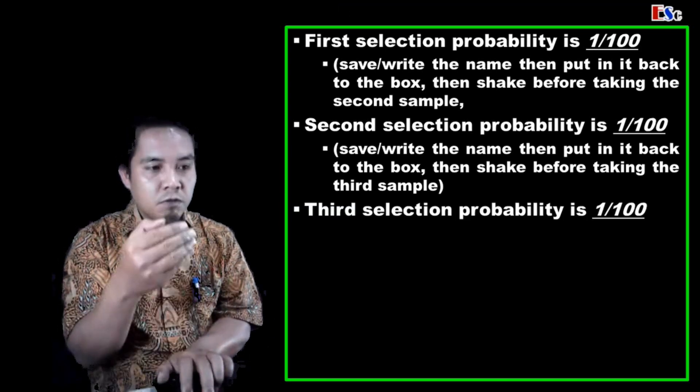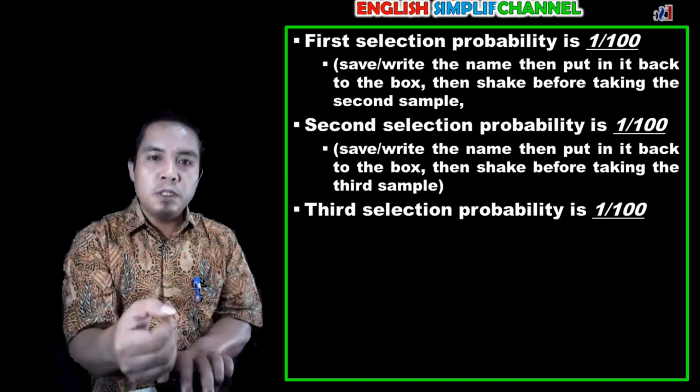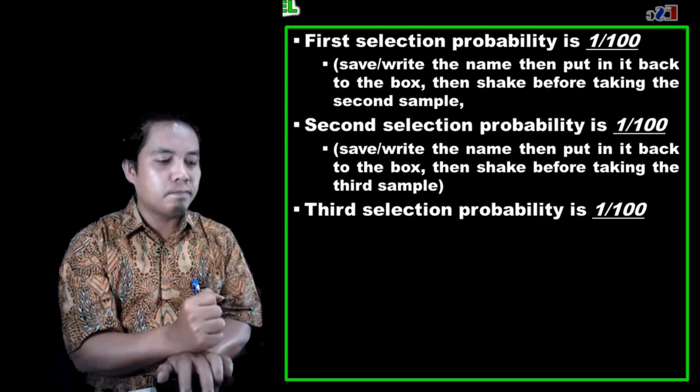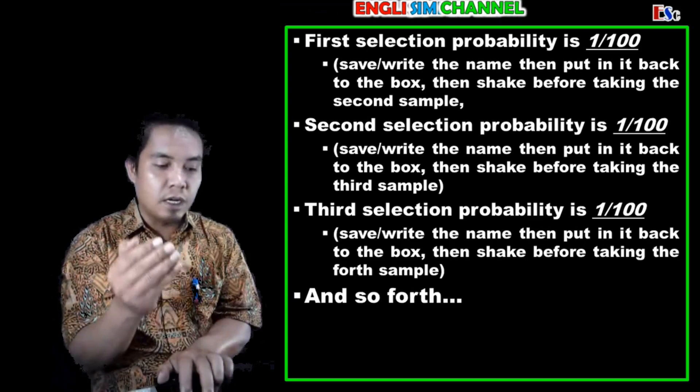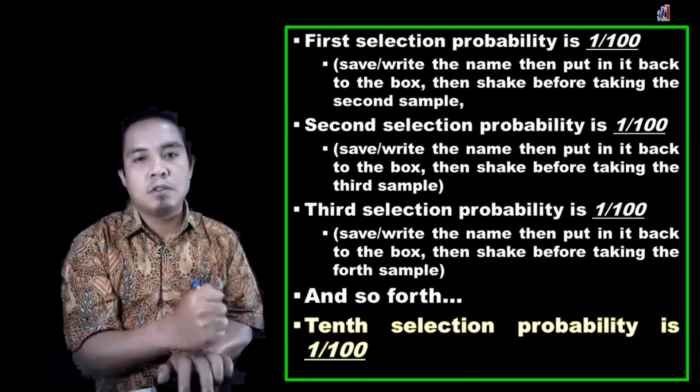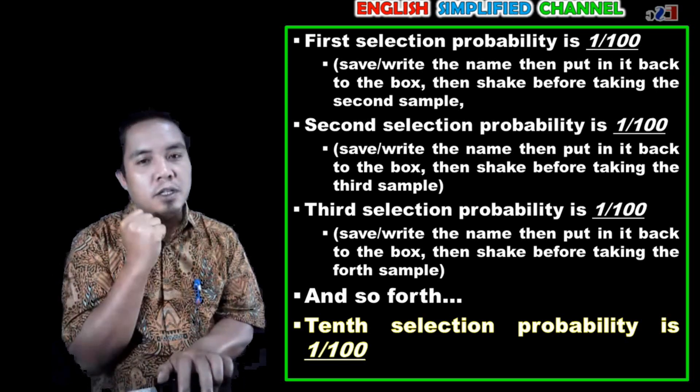So see that: first, second, third, the probability is equal, the number of the sample, and so forth until you get the last sample from the population. But in this case...